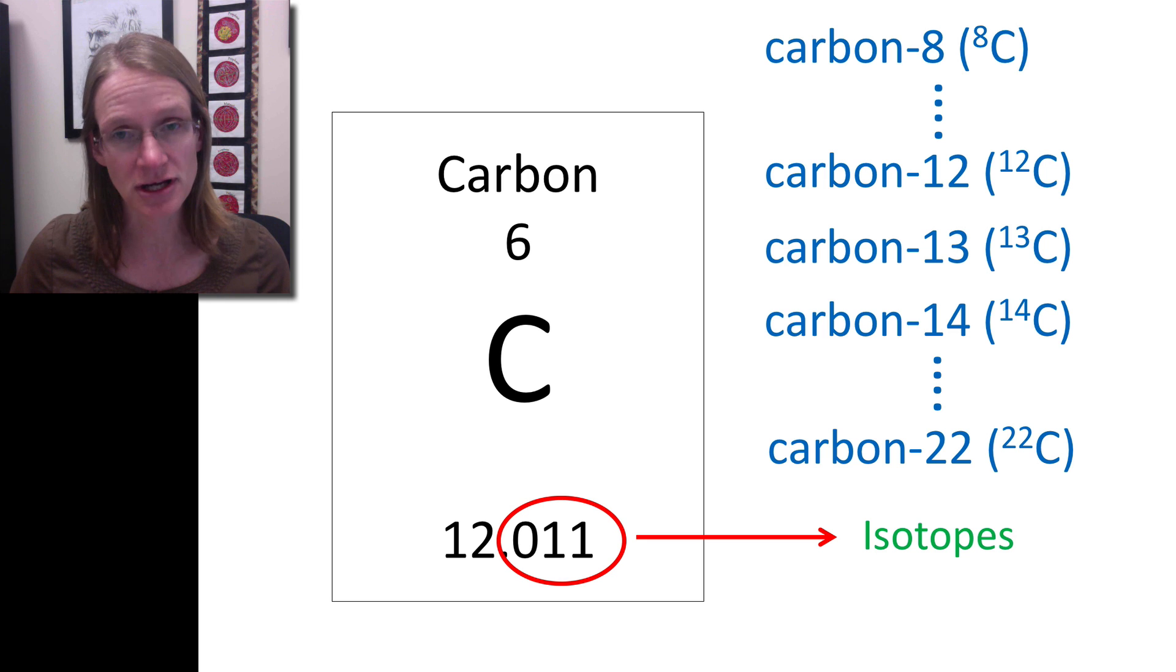But there are these other different forms or isotopes, and so we know that the atomic weight is reflective—it's actually an average of the relative proportions of isotopes in the environment.